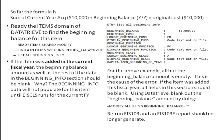For our example above, all but the beginning balance amount is empty. That beginning balance amount is the cause of the error. If this item was added this fiscal year, all fields in this section should be blank. Using data tree, blank out the beginning balance amount — for example, modify all using beginning balance equals quotation marks. Rerun the 103 and the 103E report should no longer generate.